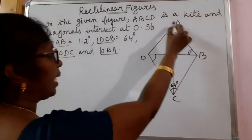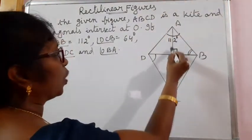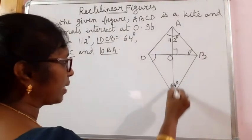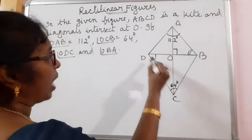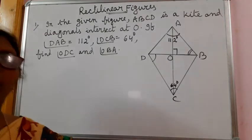That means if angle DAB is equal to 112 degrees, angle BAO is 112 by 2, that is 56 degrees. Same way, the diagonal bisects angle DCB. If this is 64, angle DCO will be 32 degrees. These are the properties of kite.